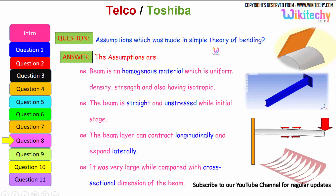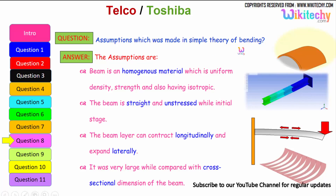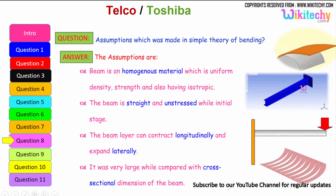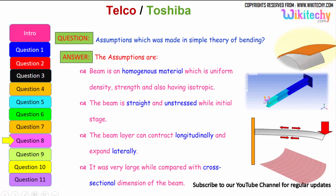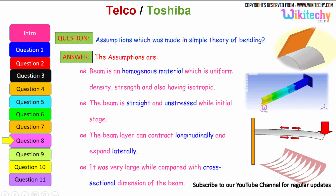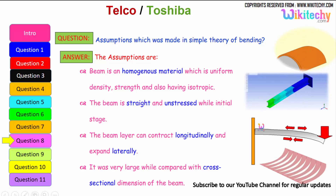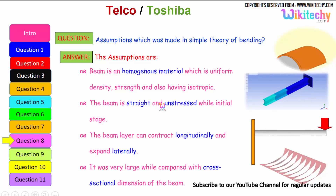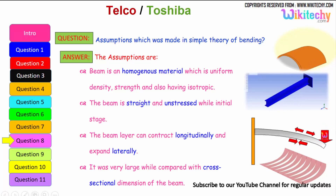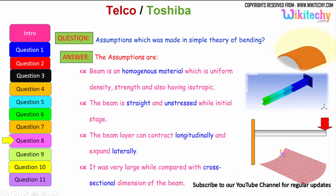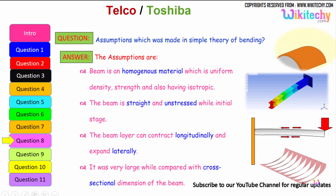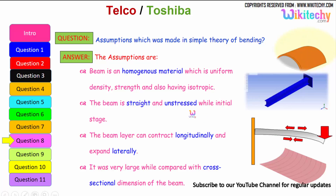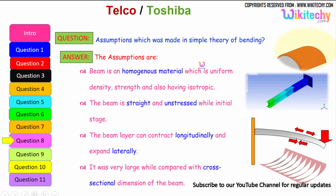What are the assumptions made in the simple theory of bending? The assumptions are: the beam is a homogeneous material with uniform density, strength, and is also isotropic. The beam is straight and unstressed at the initial stage. The beam can contract longitudinally and expand laterally. The span of the beam is very large when compared with the cross-sectional dimension of the beam.